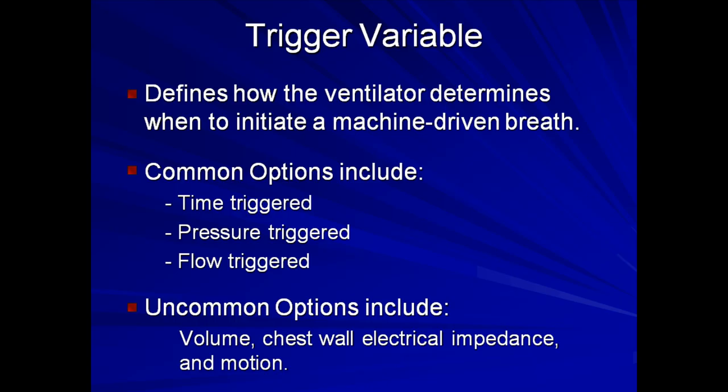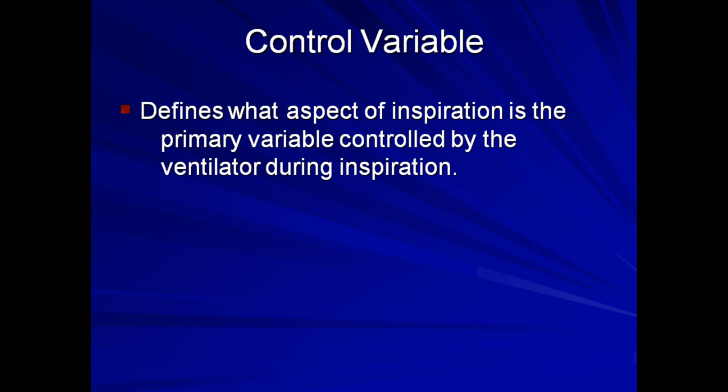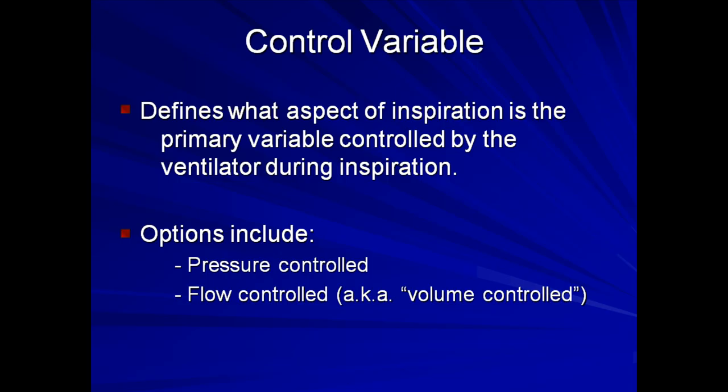The control variable defines what aspect of inspiration is the primary variable controlled by the ventilator during inspiration. The most common options include pressure controlled and flow controlled. In pressure controlled ventilation, the pressure delivered to the airway is constant regardless of airway resistance or compliance. Therefore, if pressure is preset and constant, changing resistance or compliance results in changing tidal volumes. In flow controlled ventilation, the flow is controlled as a function of the preset tidal volume and the additional designation of flow pattern. If flow is predetermined, changes in resistance or compliance result in changes in airway pressures.